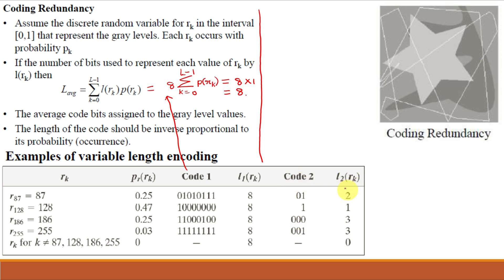So my l_2(r_k) will be 2, 1, 3, 3. As here there are 2 bits, 1 bit, 3 bits, and 3 bits. So for code 2, L_avg = 2×0.25 + 1×0.47 + 3×0.25 + 3×0.03 = 1.81 bits.